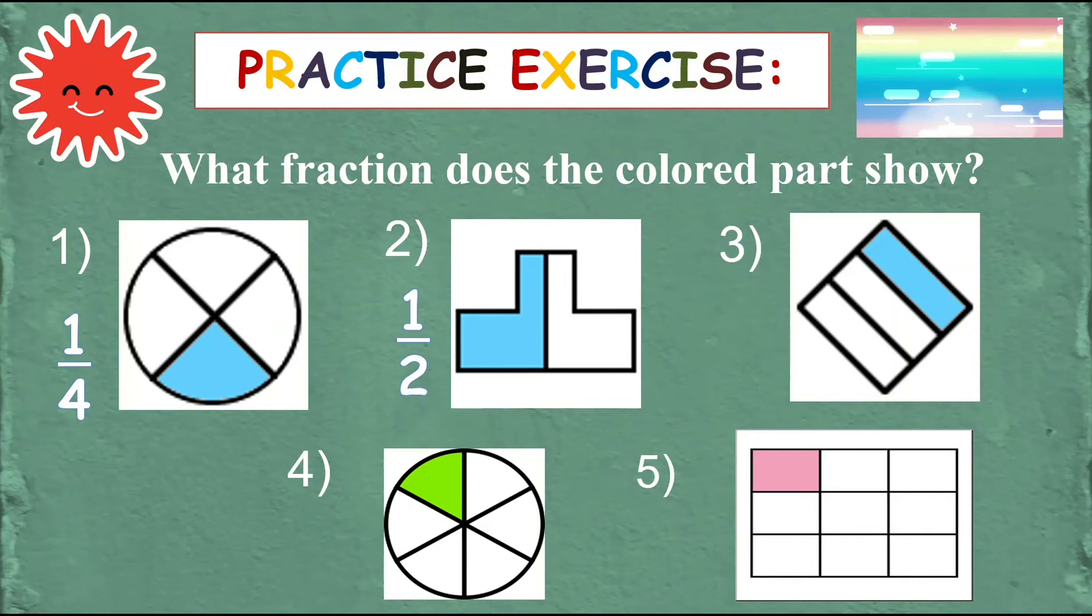Okay the colored part is one fourth. Okay next number two yes it's one half. Okay one half one out of two right there are two parts in all and one is shaded or colored. Number three correct it's one third.